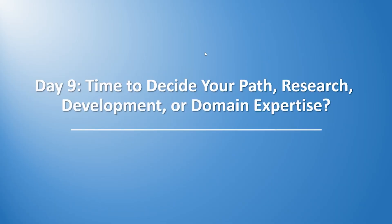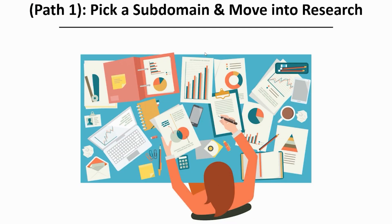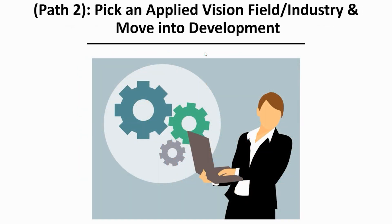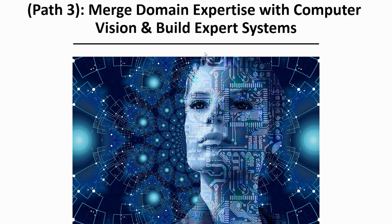Day nine, it's time to decide your path: research, development, or domain expertise. I'll show you three separate paths. Path one is to pick a sub-domain and move into research — for example, if you're interested in GANs, you can make a research career in that specific niche. Path two is to pick an applied vision field or industry and move into development — for example, the autonomous vehicle industry or augmented reality. The final path is to merge your domain expertise with computer vision to build expert systems — for example, combining medical knowledge with computer vision to build a skin disease detector.